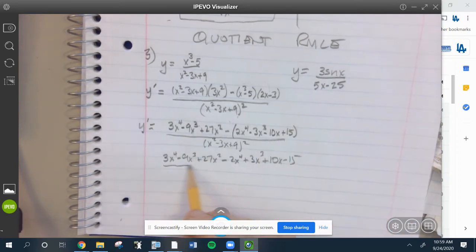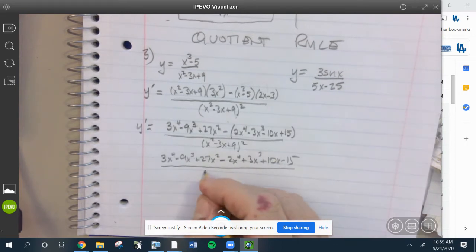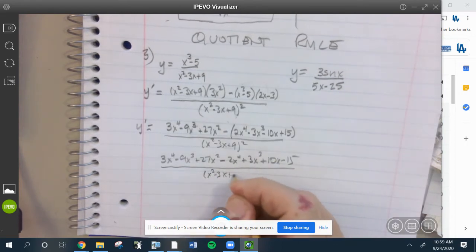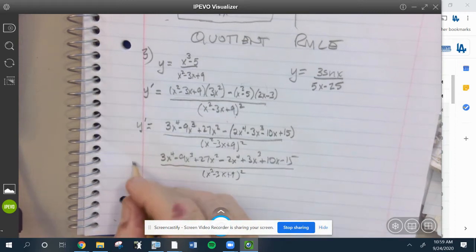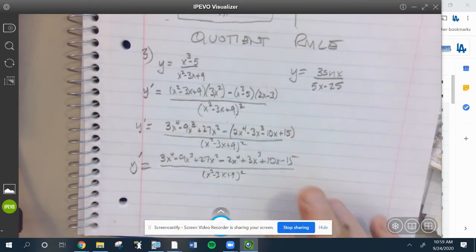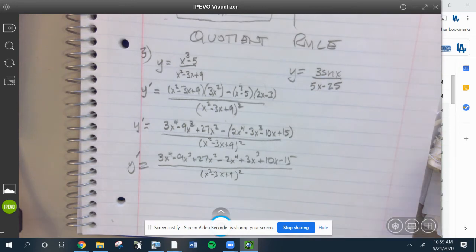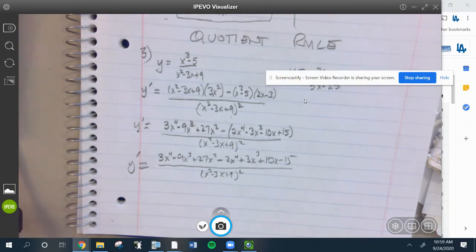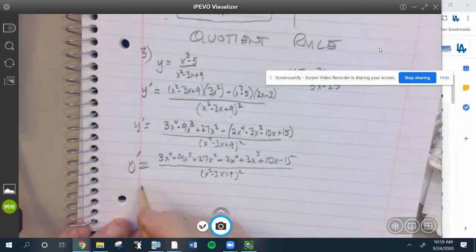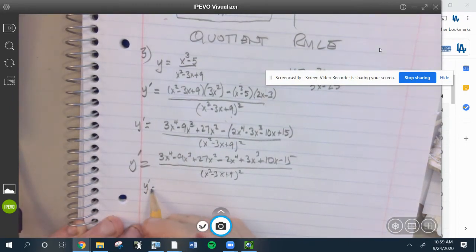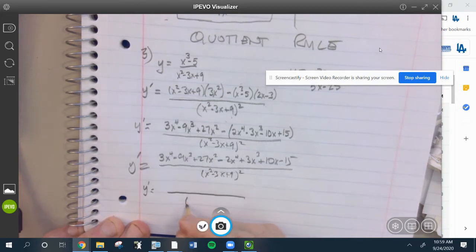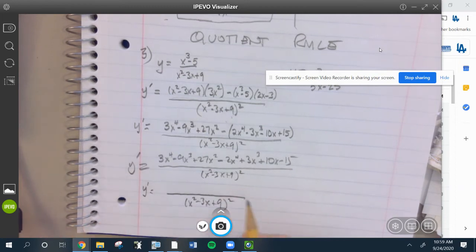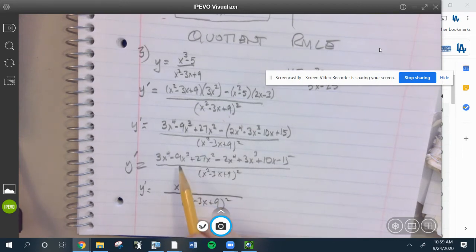We're going to combine like terms up top. So I have 3x to the fourth minus 2x to the fourth, I have negative 9x cubed plus 3x cubed.